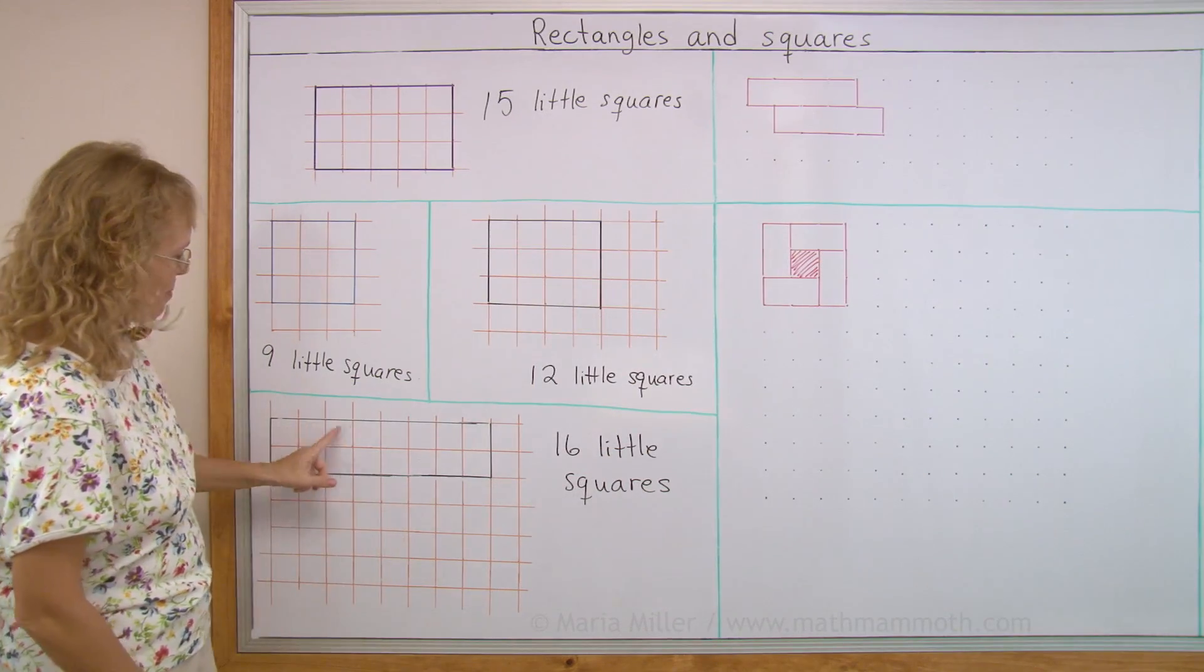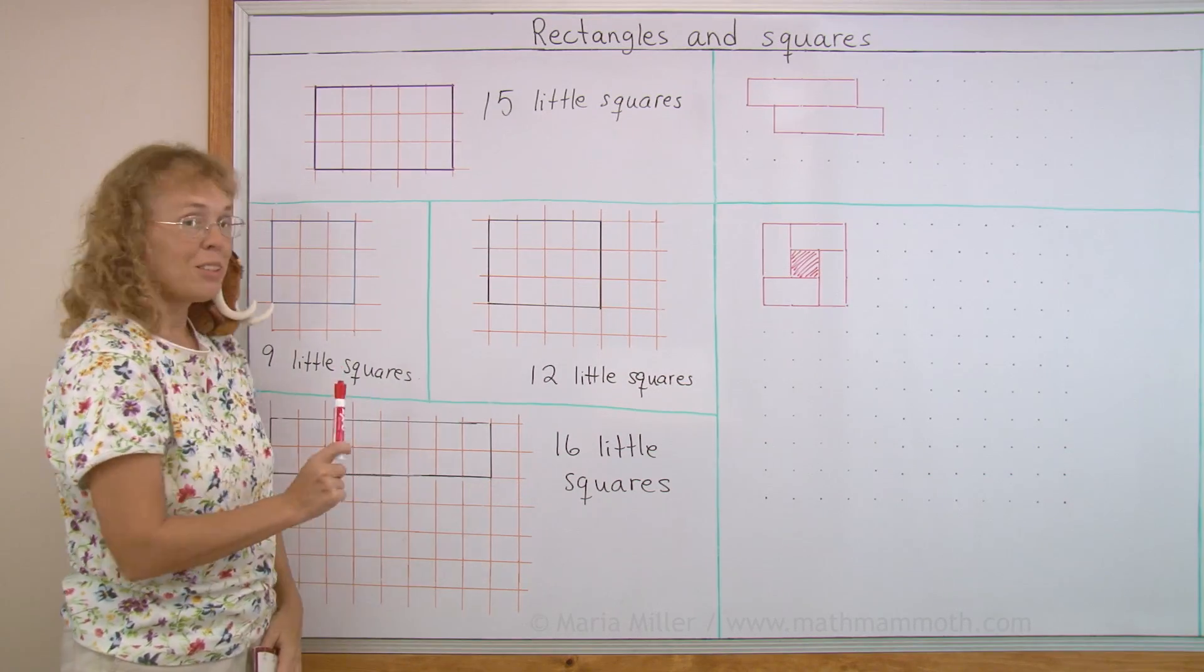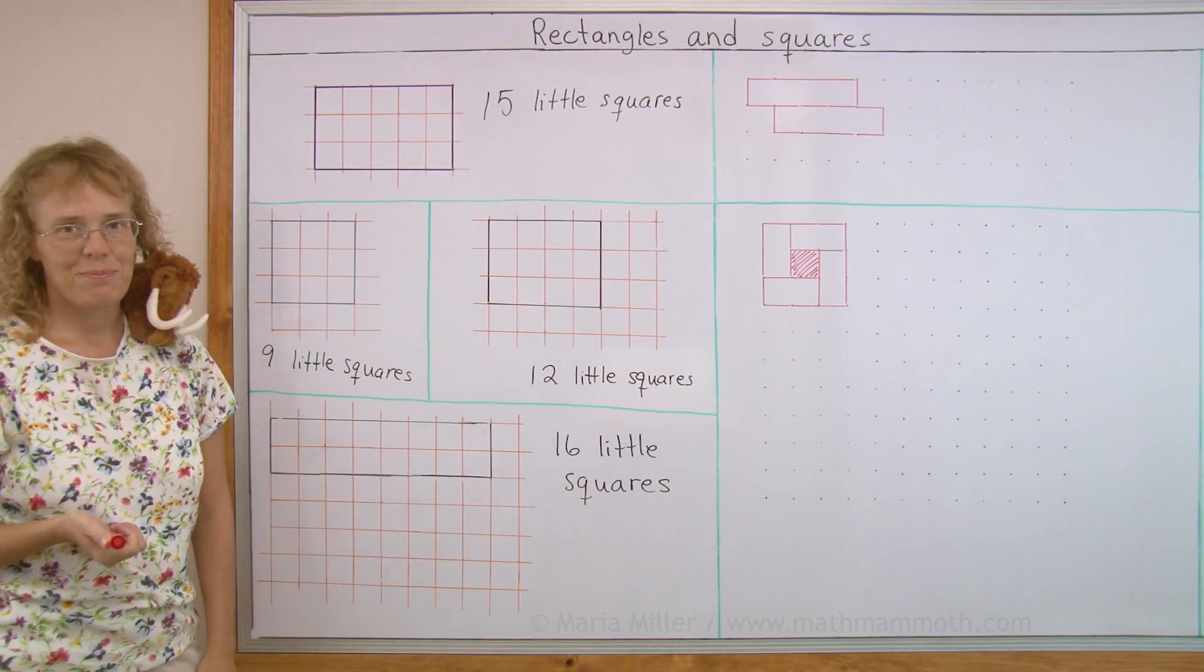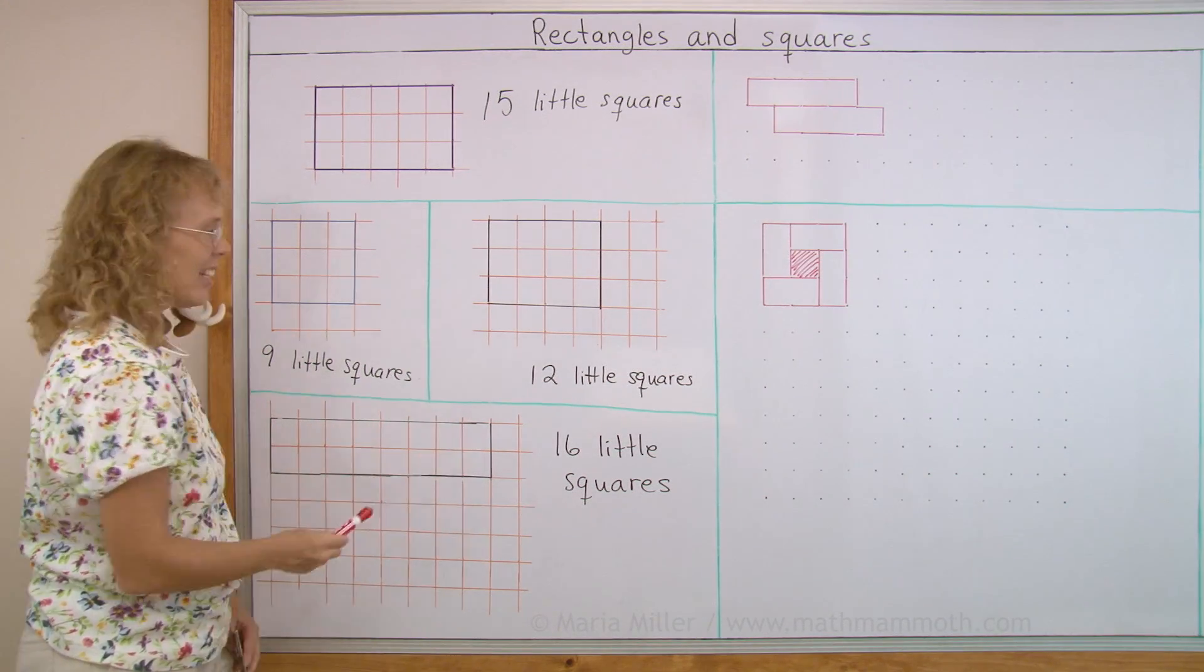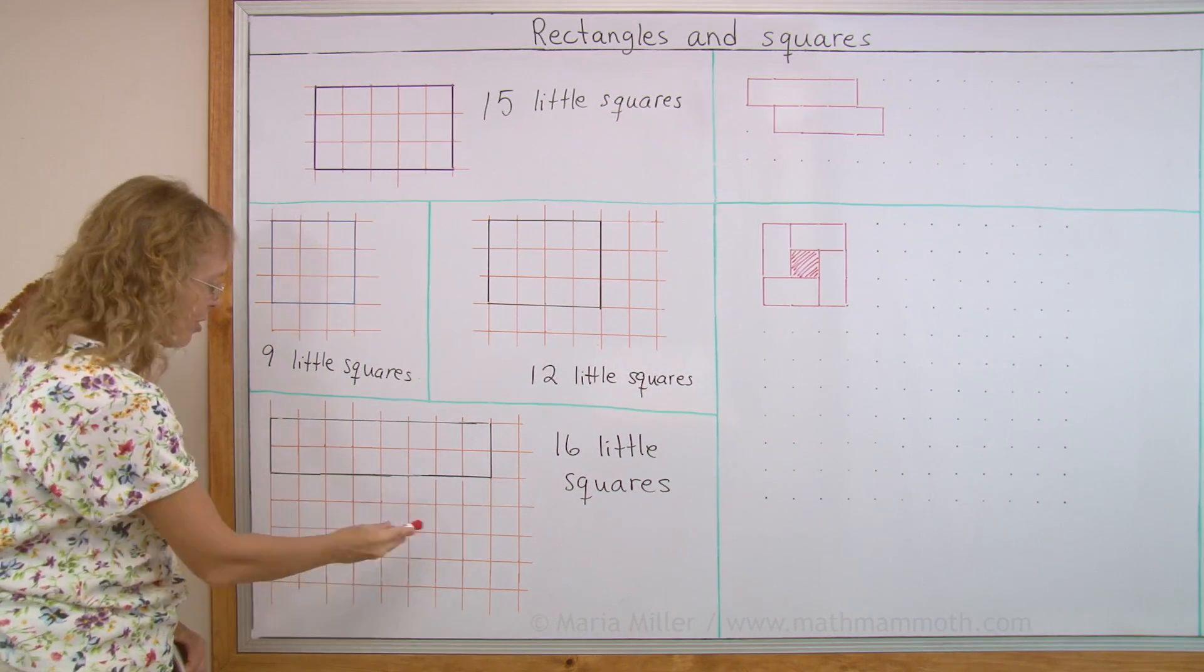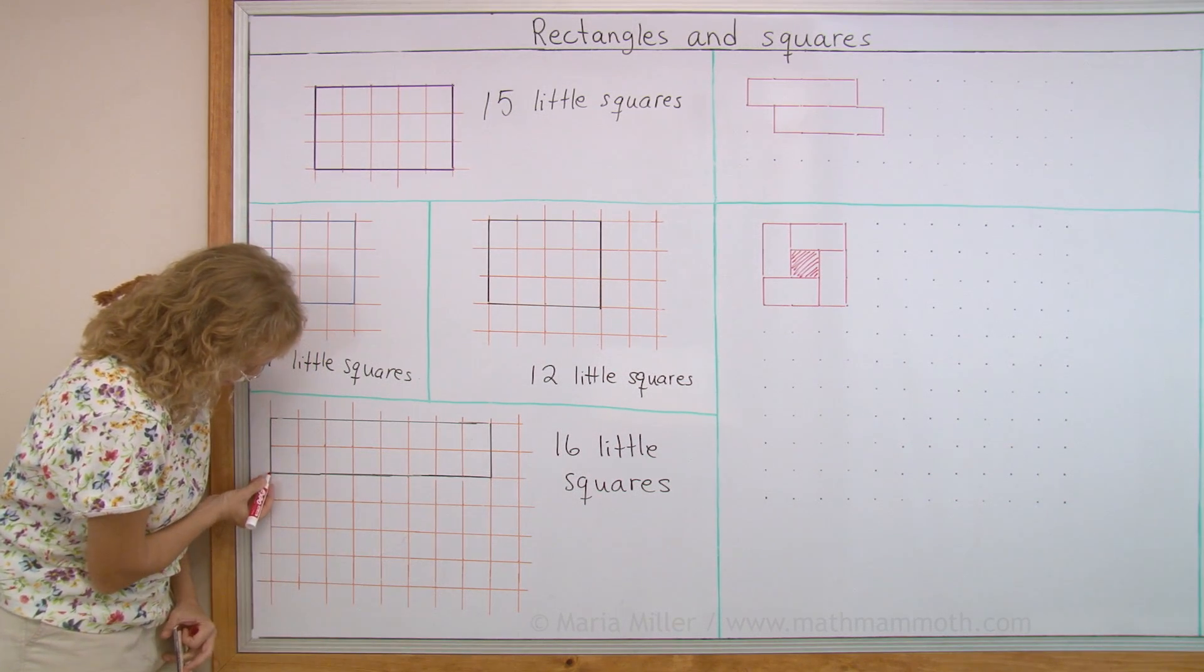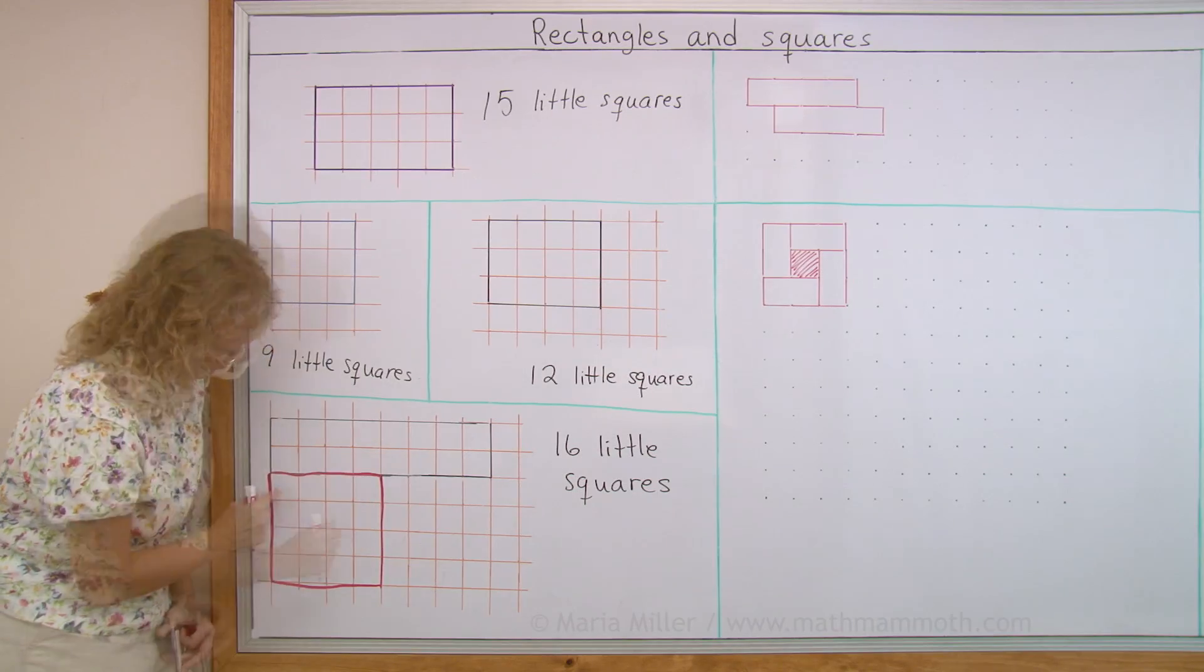Kind of like that. Okay. 8 and 8. Can you think of one more way of making a rectangle with 16 little squares inside? You know, since we have 8 and 8, we could take half of that. Half of 8 is 4 and make 4, 4, 4, and 4, right? Let me just sketch it for you here. 4, 4, like that. There.